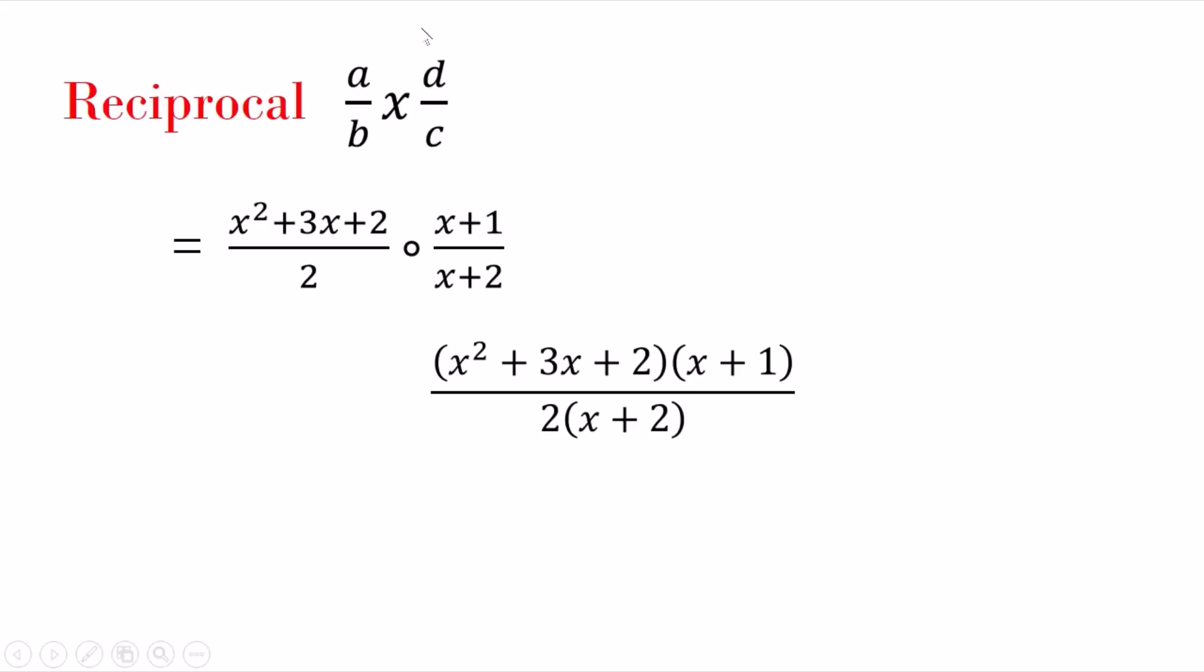So reciprocal, what we've done: it becomes x squared plus 3x plus 2 divided by 2 times—so the x plus 1 was on the bottom, it becomes on the top. Right now we change to multiplication, so this sign should say x, but because we're using x here, that's why we use this sign. But this means we are multiplying. What this means is top to top, bottom to bottom. Meaning 2 becomes times x plus 2.